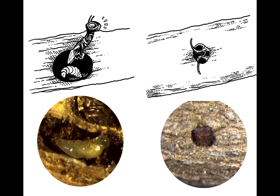At a later point the host is then induced to start creating an emergence hole. This emergence hole is smaller than the ones they typically make, and the host dies with its head plugging the hole. On the bottom right you see an emergence hole with the head of the host peeking out — here is one of the host wasp's eyes.